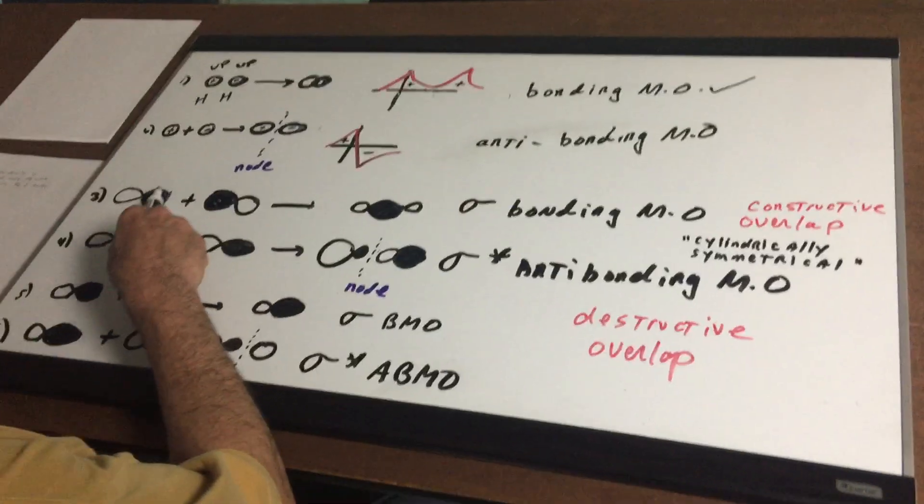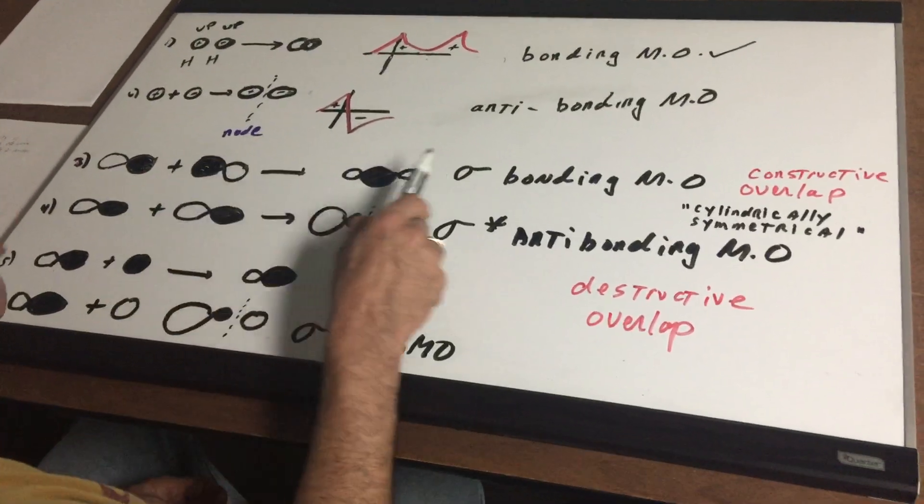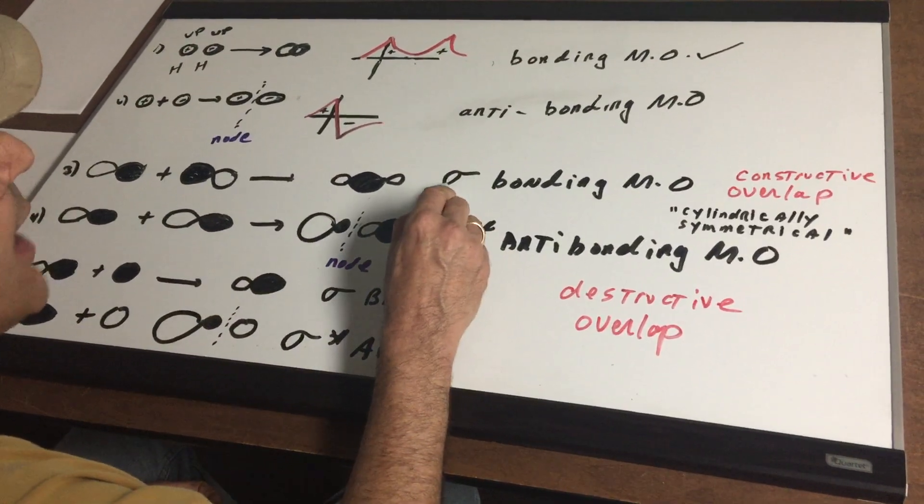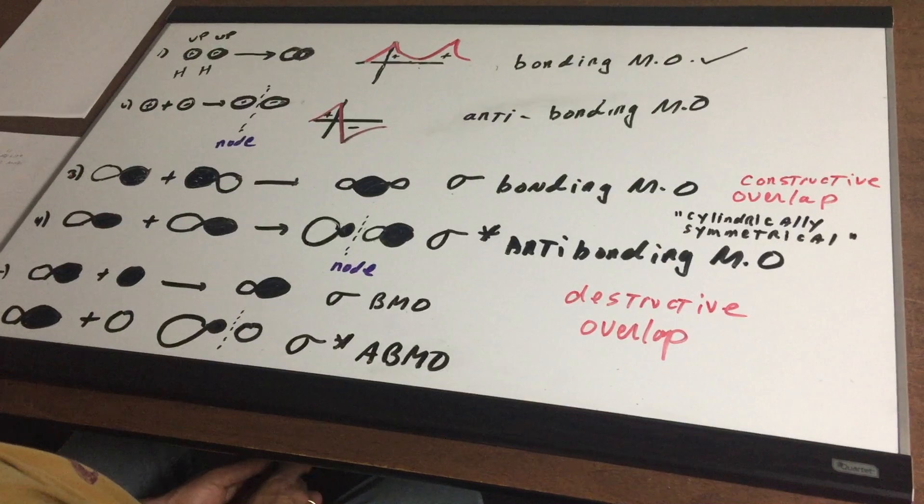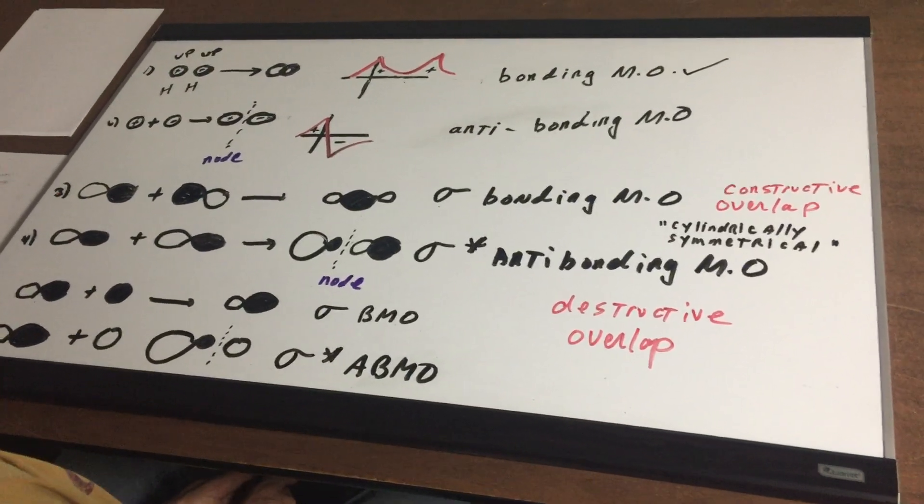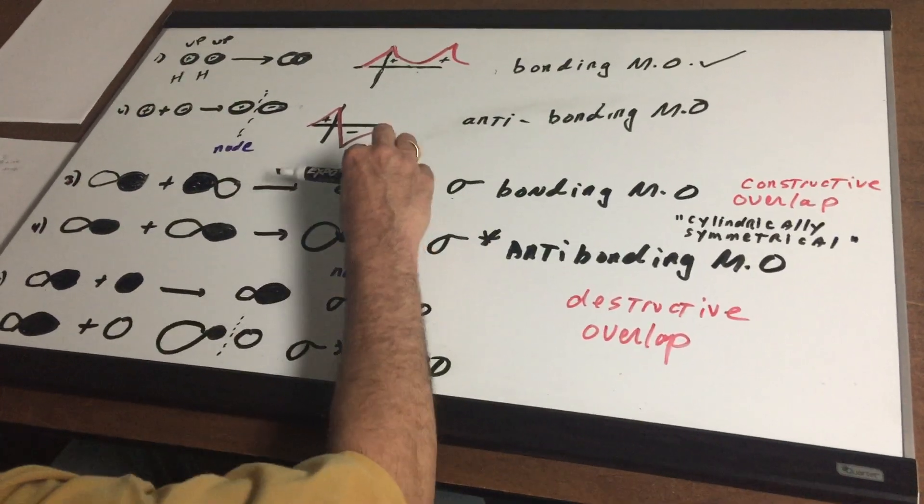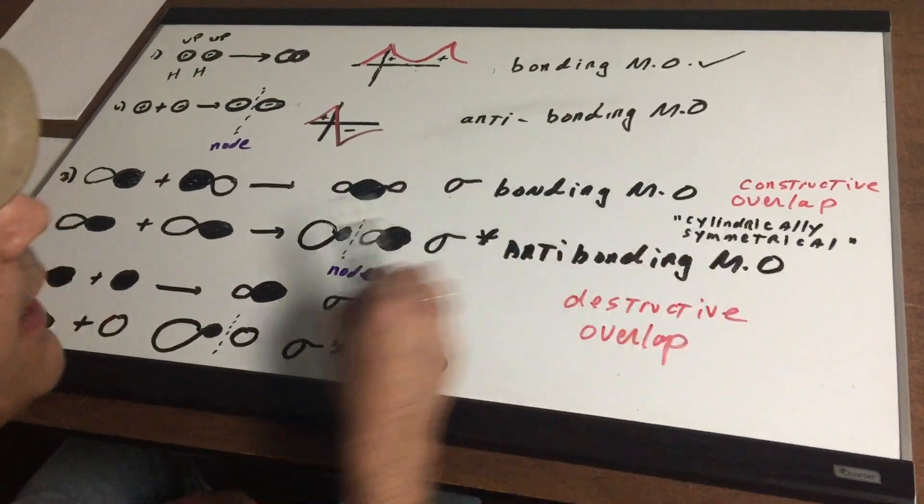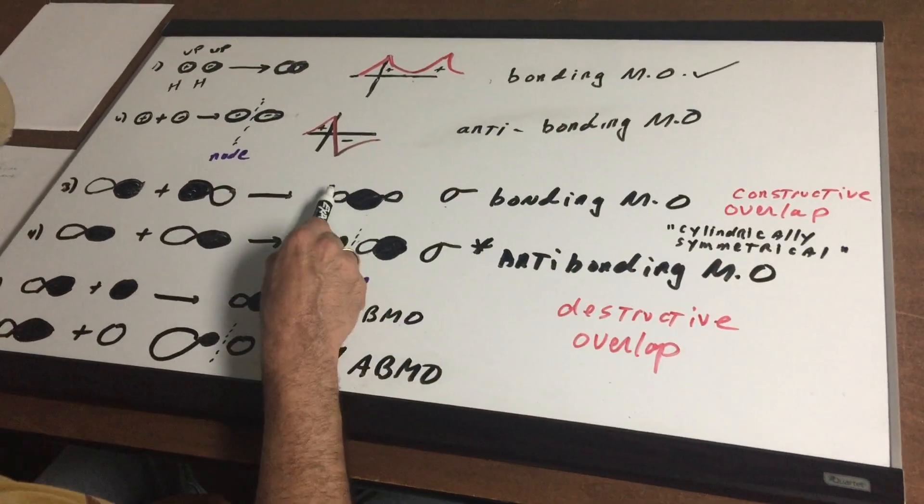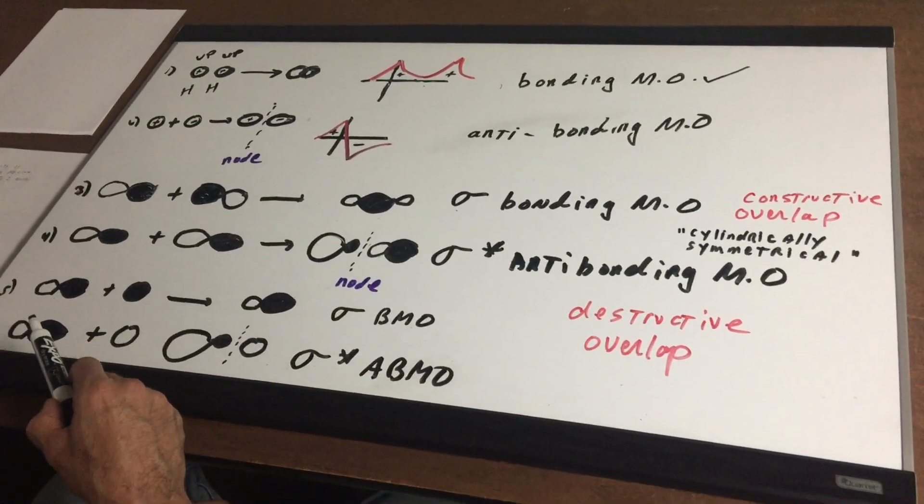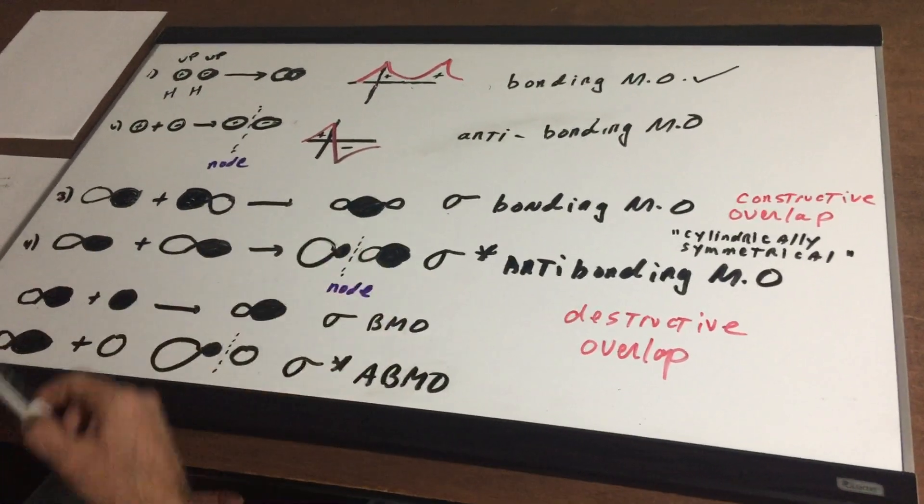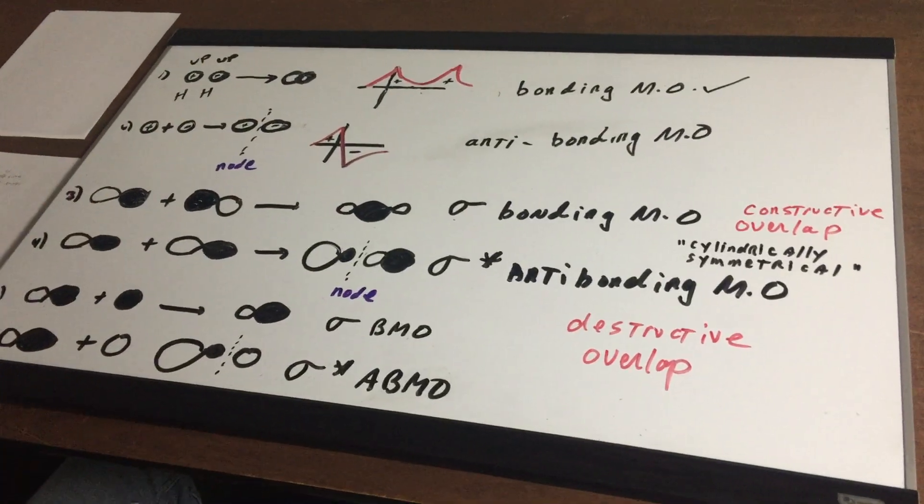Notice whenever you form this type of a situation we call this a sigma bonding molecular orbital. Notice that the electron density is centered along the line connecting the two atoms and therefore we can say it's cylindrically symmetrical and that's what we call our sigma bonding orbital, meaning the waves have combined together constructively.